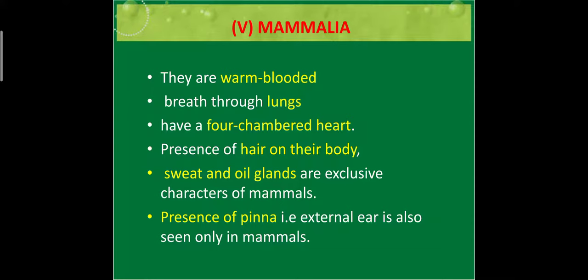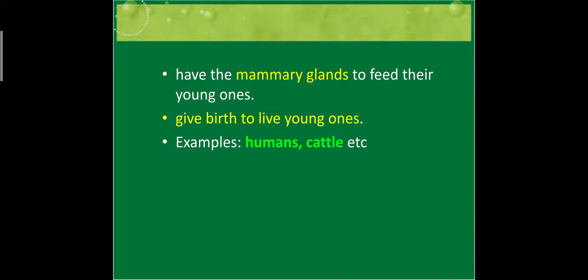The external ear — the pinna — is the outer part where we wear our earrings and where parents sometimes hold the ear. That outer part is known as pinna, and it is only seen in mammals. They have mammary glands which help them feed their young ones. They give birth to young ones.